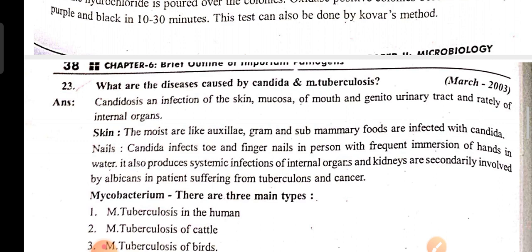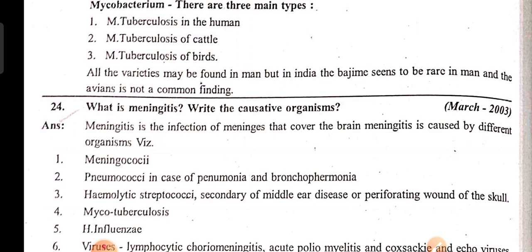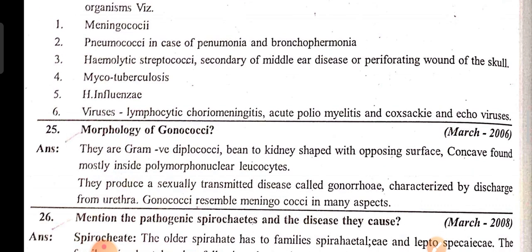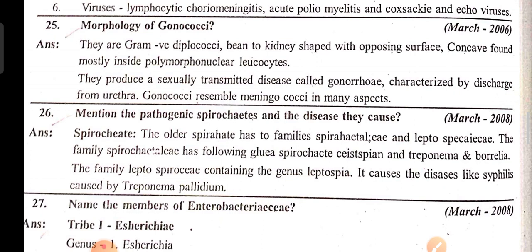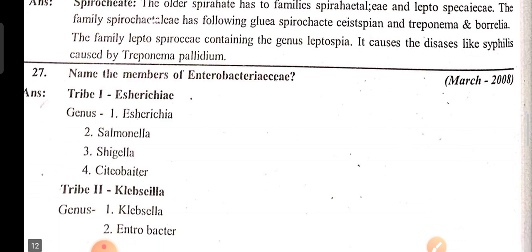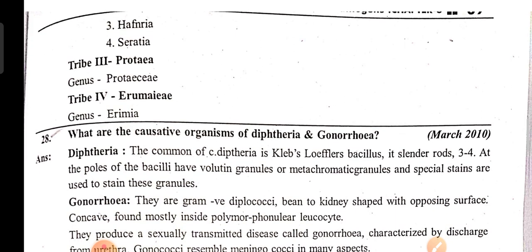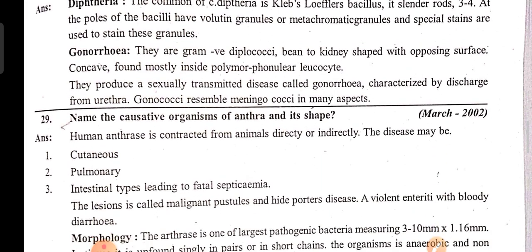What are the diseases caused by Candida and Mycobacterium tuberculosis? What is meningitis? Write the causative organisms and morphology of gonococcus. Mention the pathogenic spirochetes and the diseases they cause. Name the members of the Enterobacteriaceae. What are the causative organisms of diphtheria and gonorrhea? Name the causative organisms of anthrax and its shape.